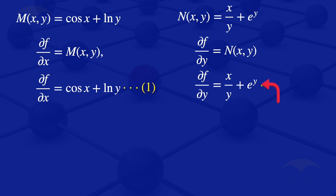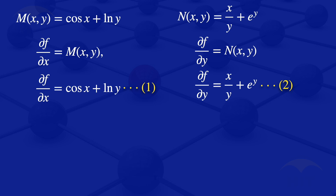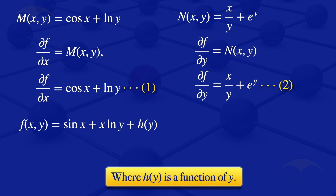Equation number 1 has the partial derivative of f with respect to x. To find the function, we integrate equation 1 with respect to x. On the left we get f. Integrating cosine of x gives sine of x. Integrating ln of y — treating y as a constant — gives x ln y. The constant of integration is a function of y, h(y), since this was a partial derivative. So f(x,y) equals sine of x plus x ln y plus h(y). I'll call this equation number 3.